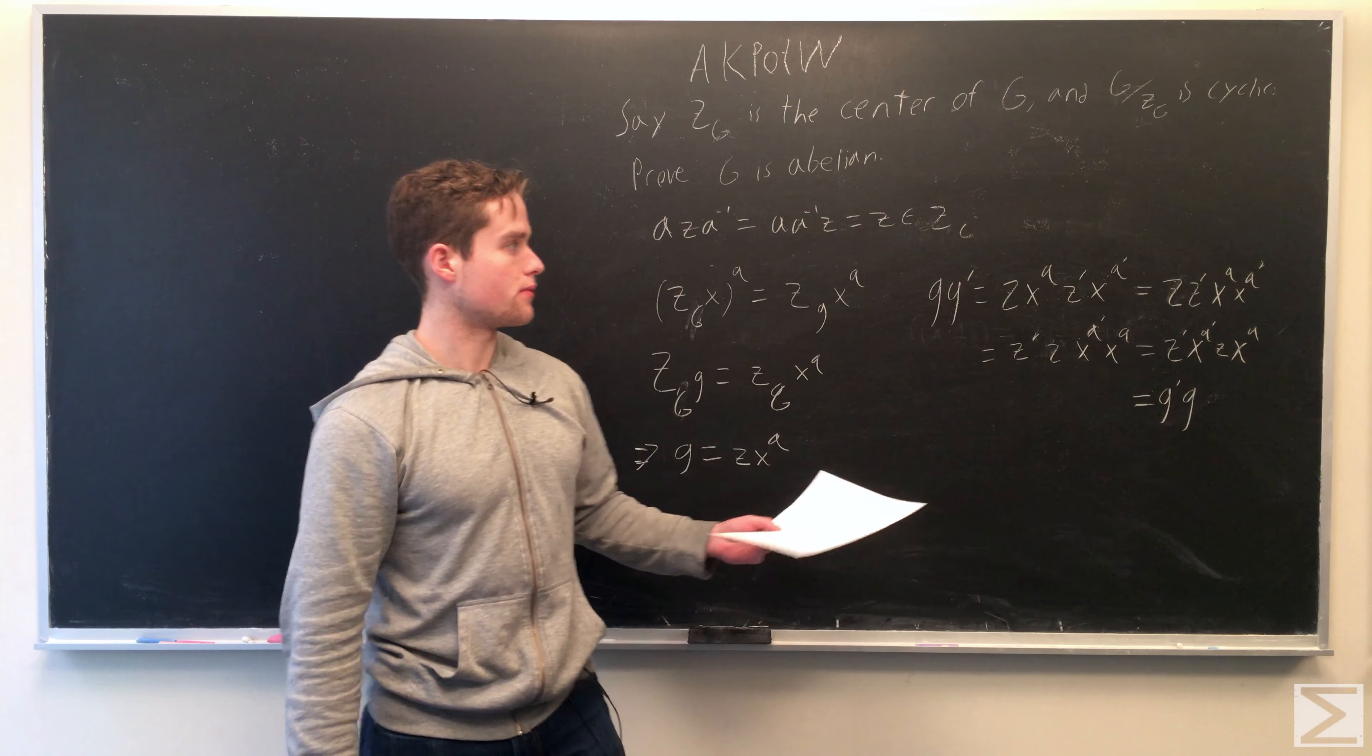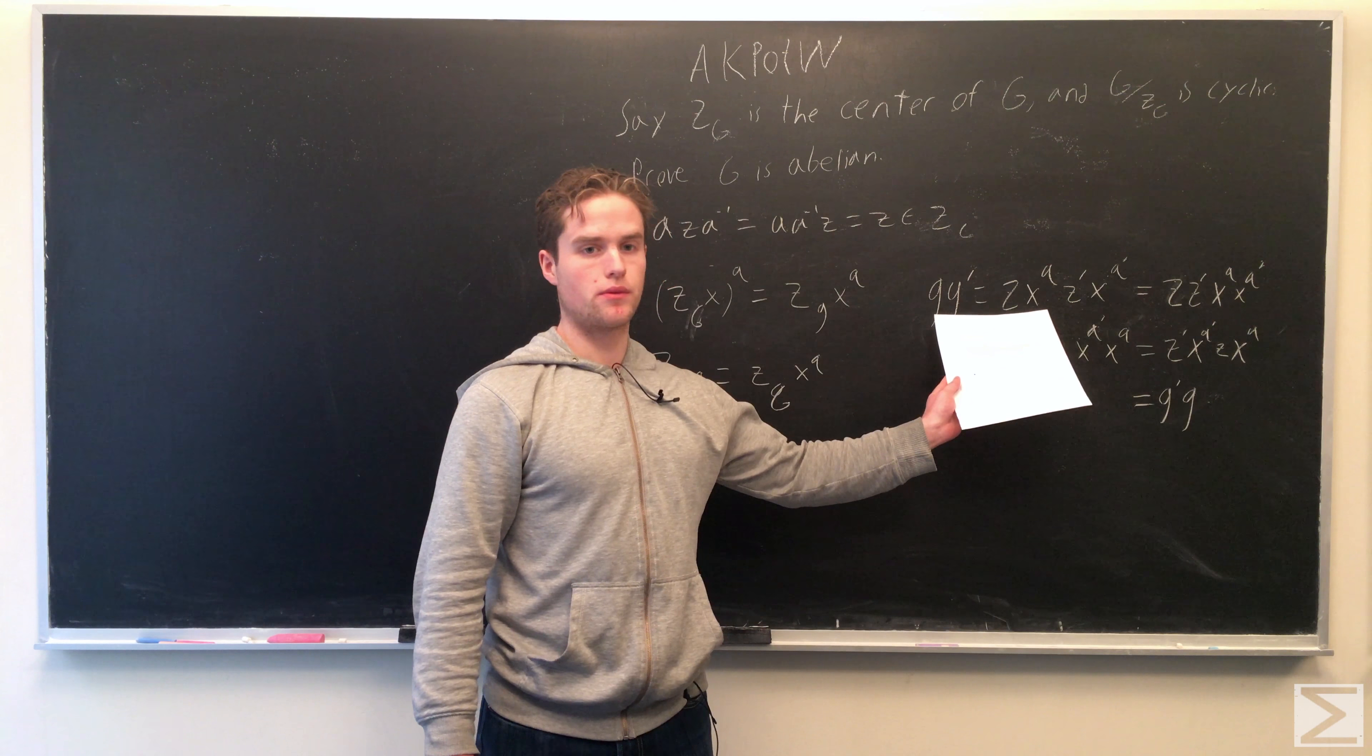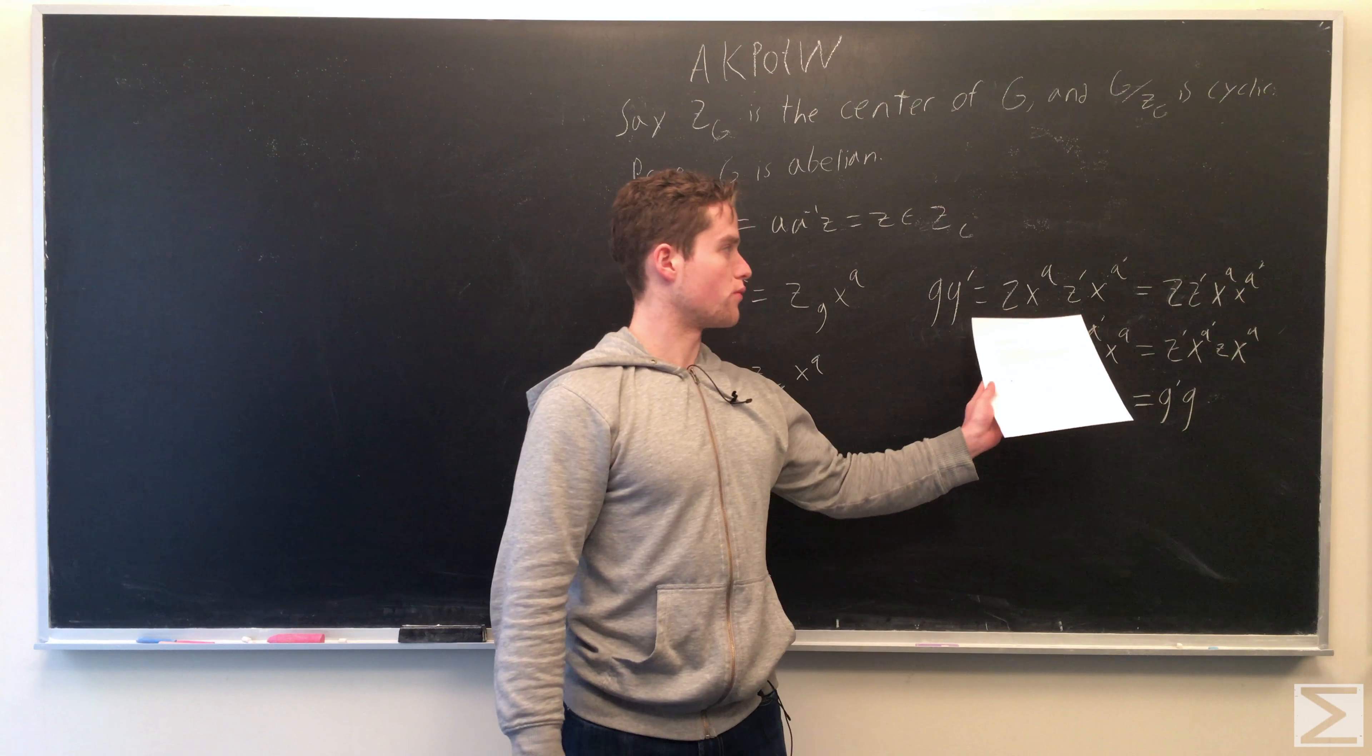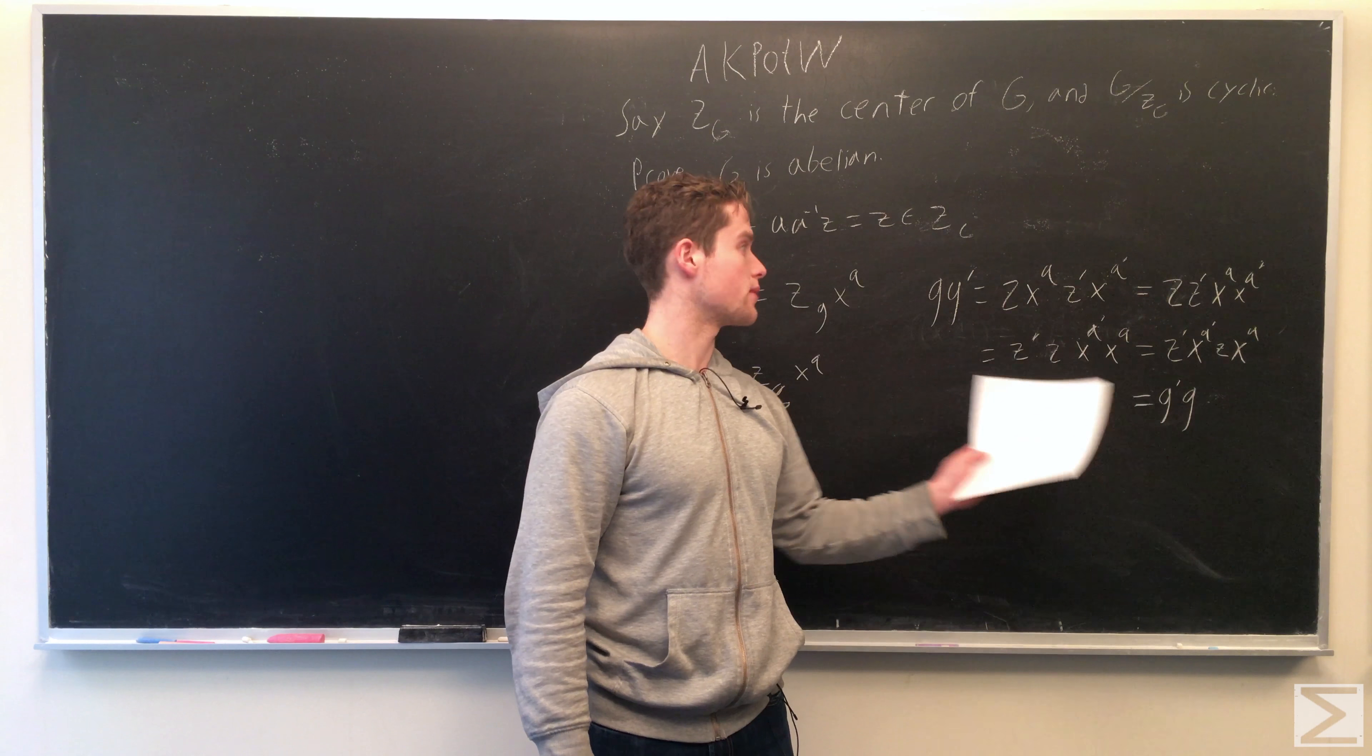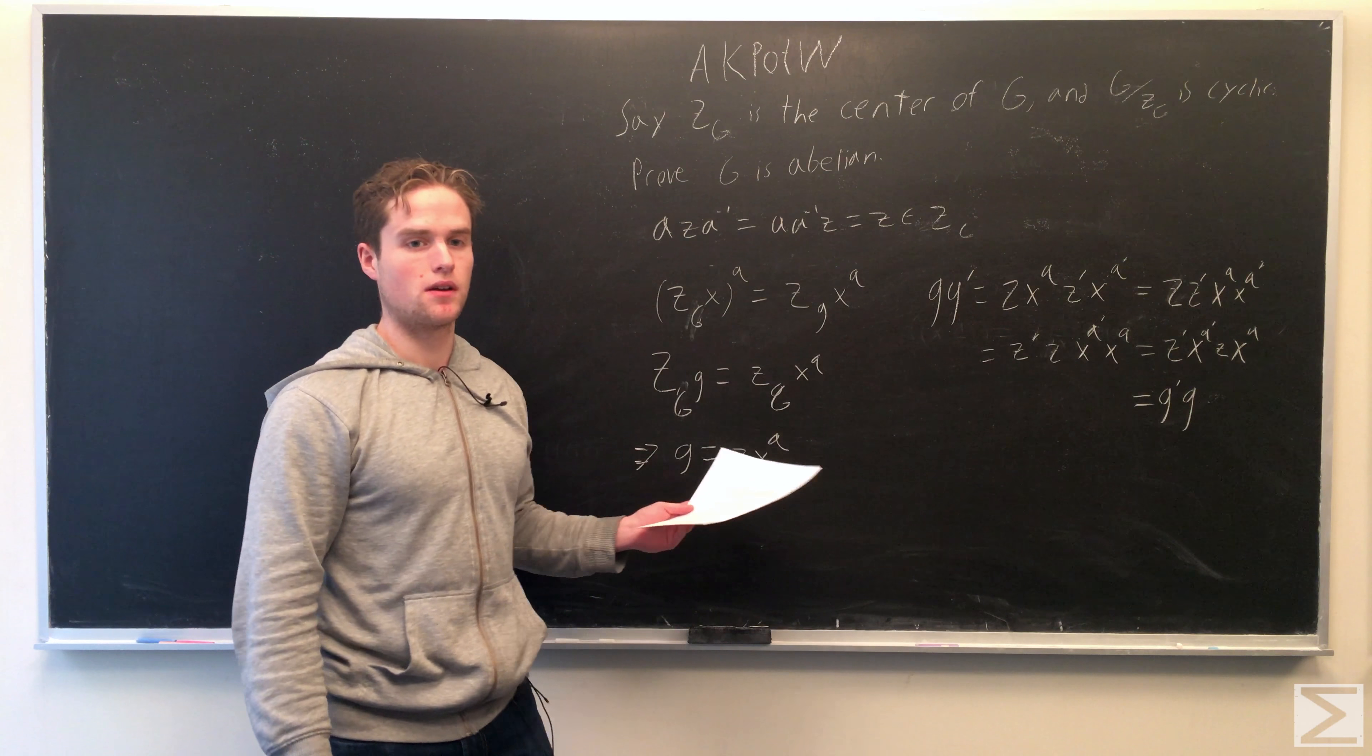So because we can flip, because Z is a member of the center, we can flip it with any element. And Z(Q), we can always flip X^Q with X^(Q'). So if we keep flipping, we'll eventually be able to flip all the elements from the right side to the left side, the left side to the right side, and we get g·g' = g'·g, where g and g' are any two elements of our group G.